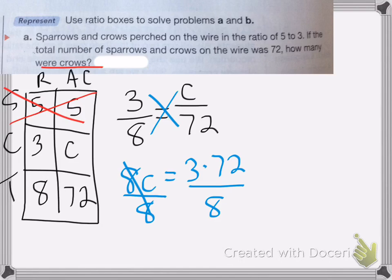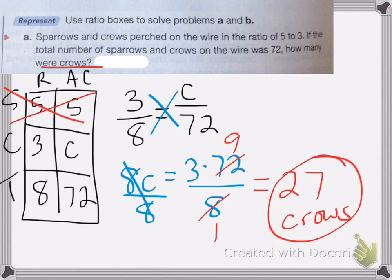And I can cancel the 8 in the 72. 8 becomes a 1. 72 becomes a 9. And I do 3 times 9 is equal to 27. So there were 27 crows on my line. And that's all. Good luck on your homework.